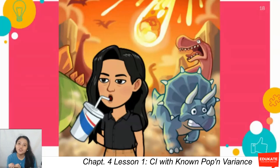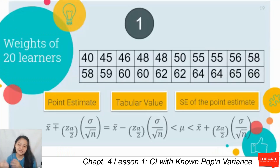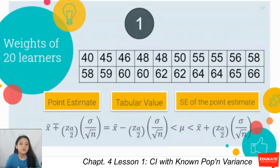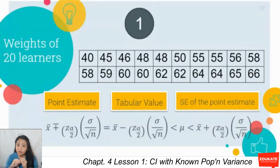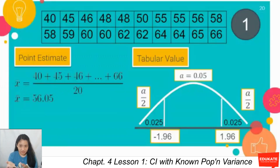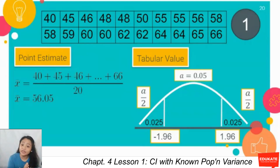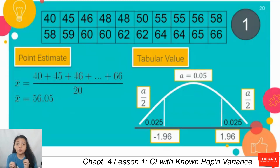Let's move on to examples. The first one: we have the weights of a random sample of 20 learners in kilograms — from 40, 45, 46, 48 kilograms up to 66 kilograms. Look for your confidence interval estimate: find your sample mean or point estimate, then your tabular value from your alpha, and then your SE of the point estimate. Adding all values and getting the average, the sample mean is 56.05.